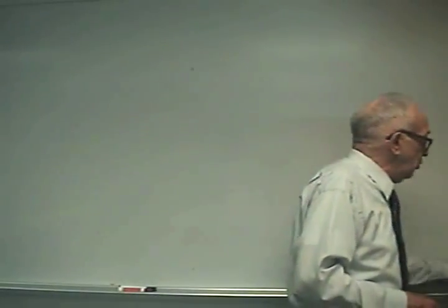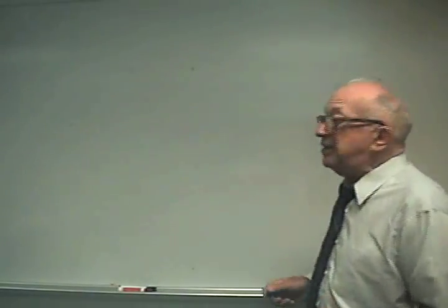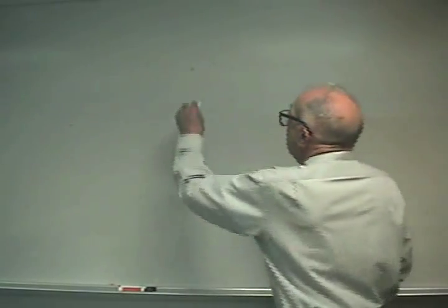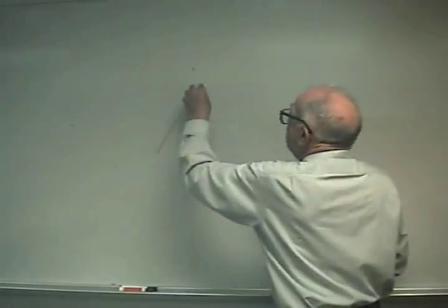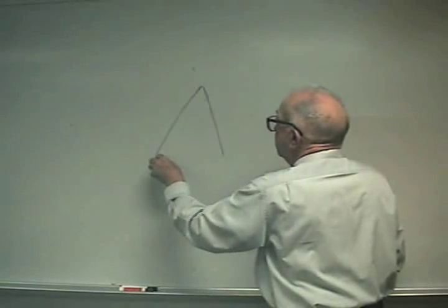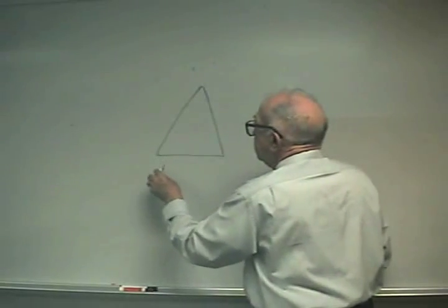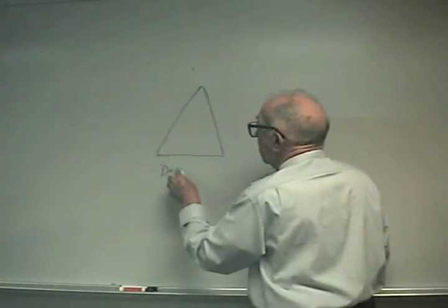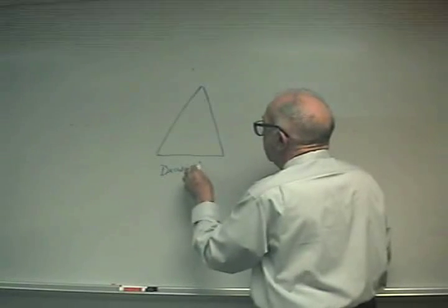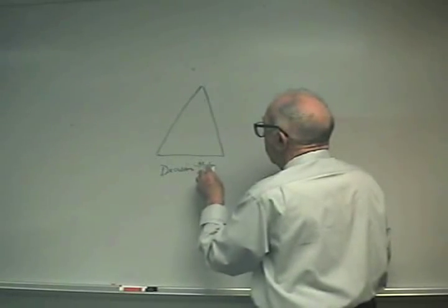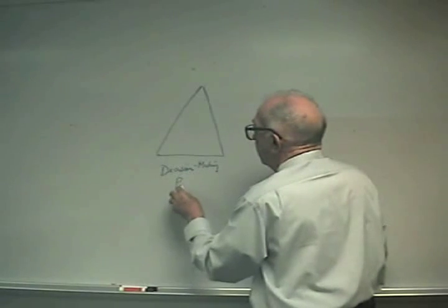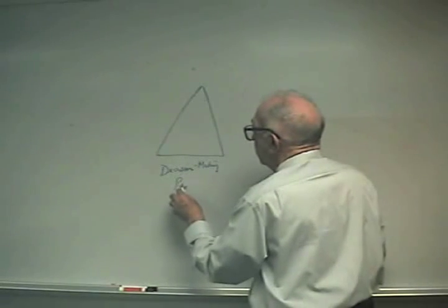Now, with decision-making, we usually would say there's three different levels of decision-making. We call this a decision-making pyramid.